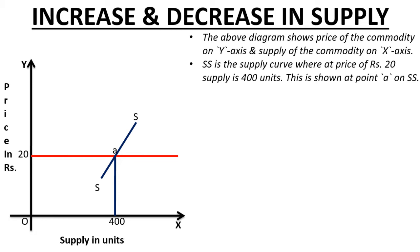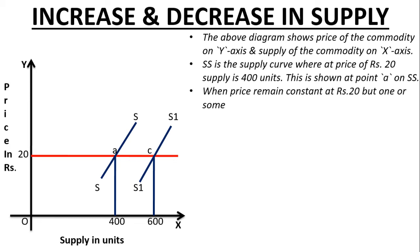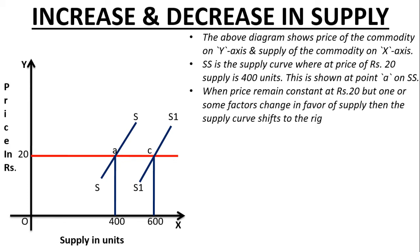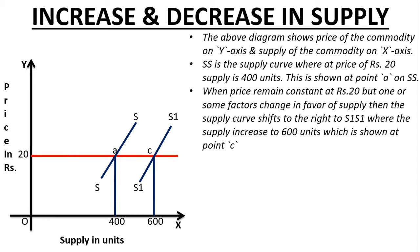Now I have to draw another supply curve which will be named S1S1. The units will increase from 400 to 600, and the new equilibrium point will be C. When price remains constant at rupees 20 but one or more factors change in favor of supply — such as a government subsidy — the supply curve shifts to the right to S1S1, where supply increases to 600 units, shown at point C in the diagram.